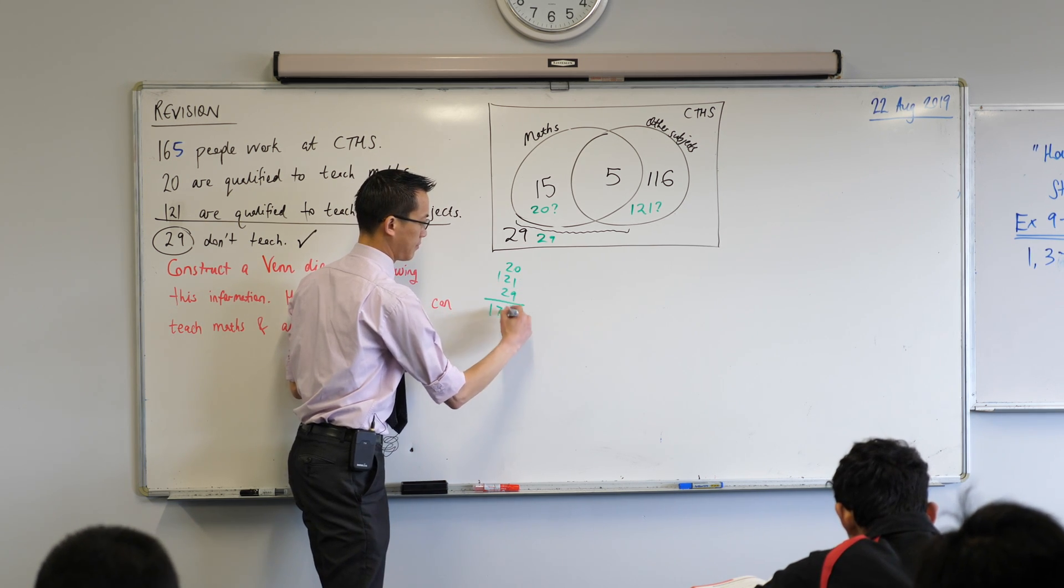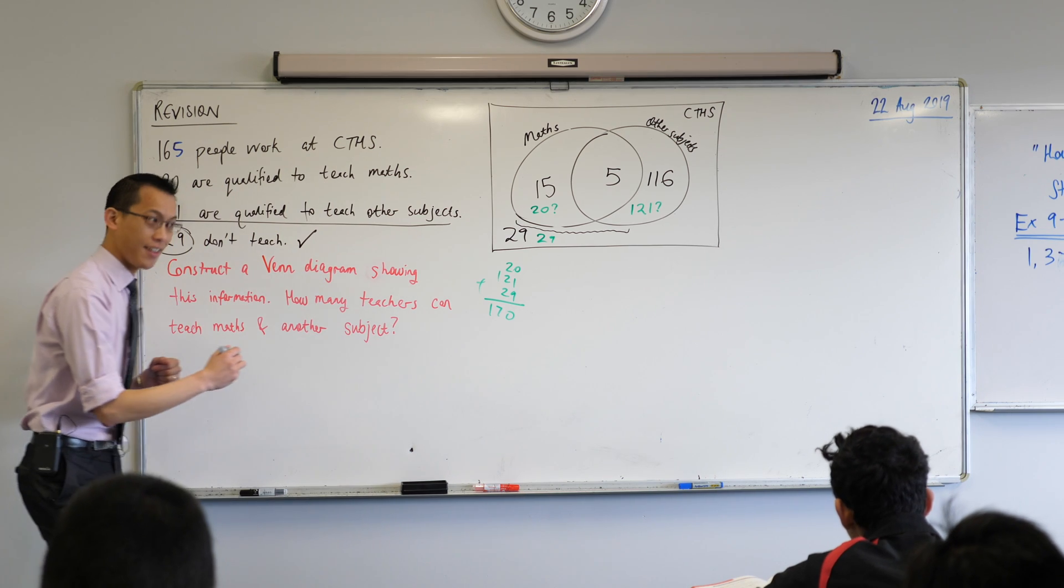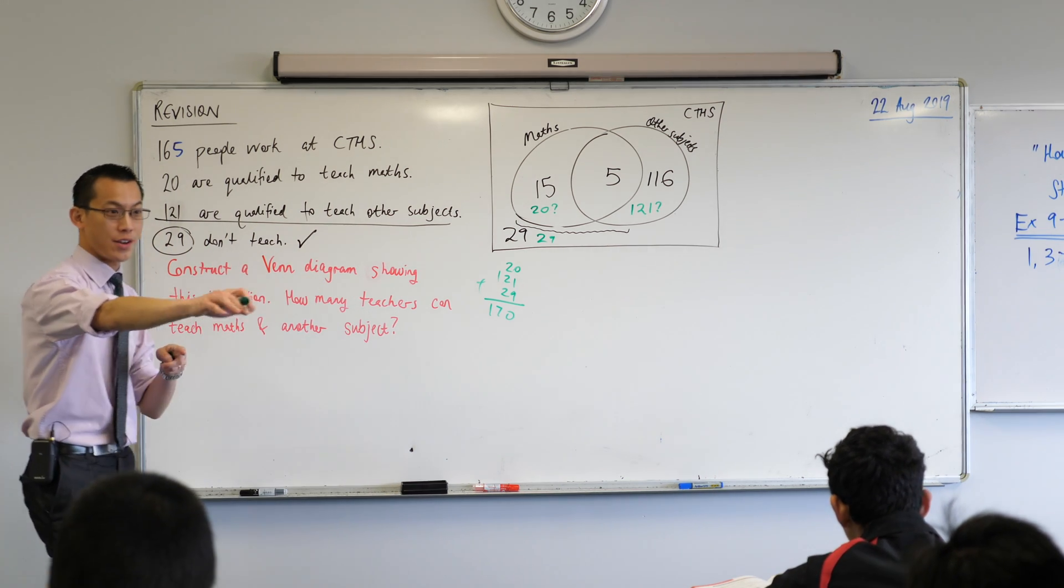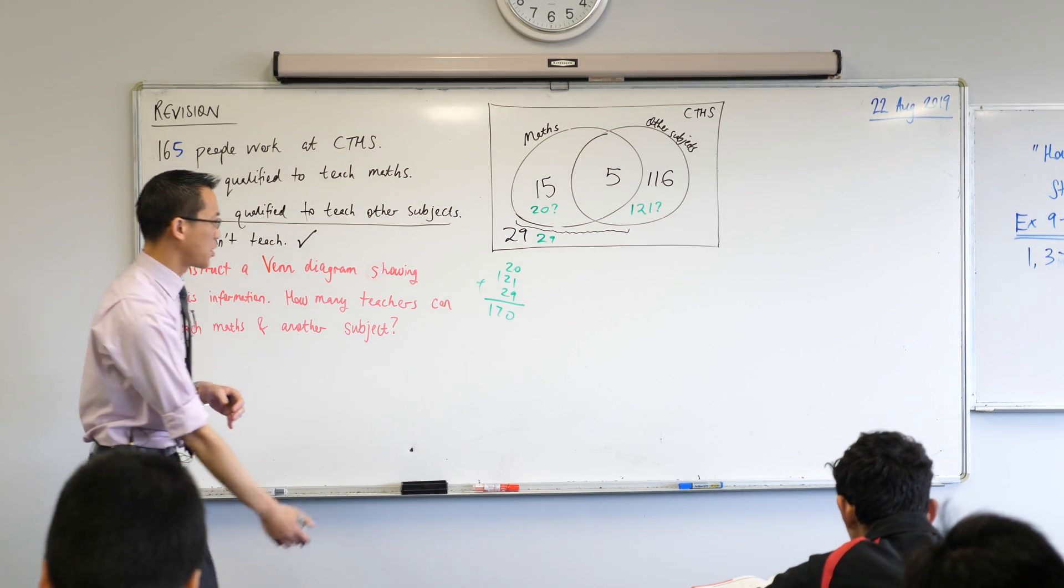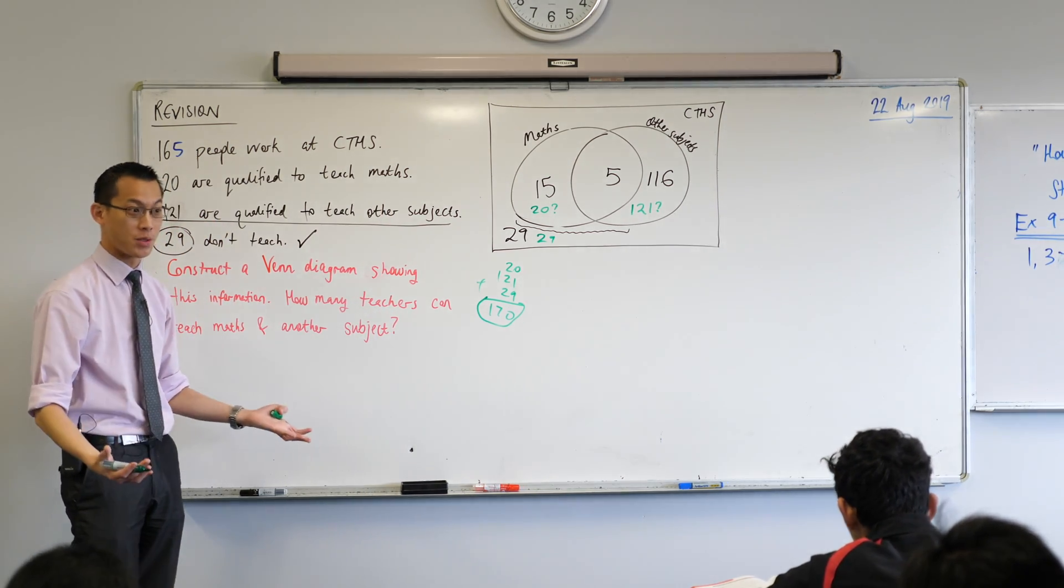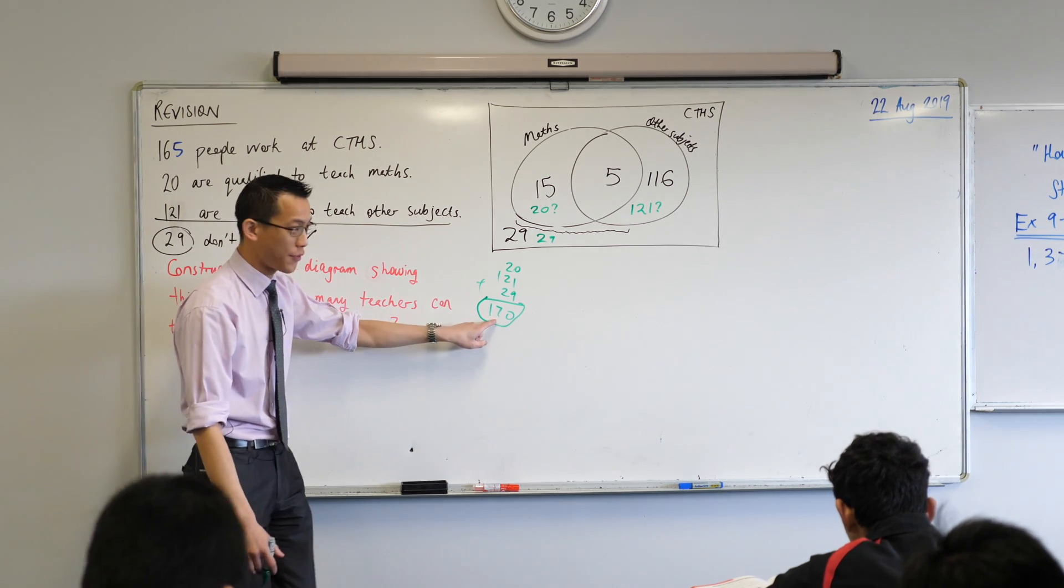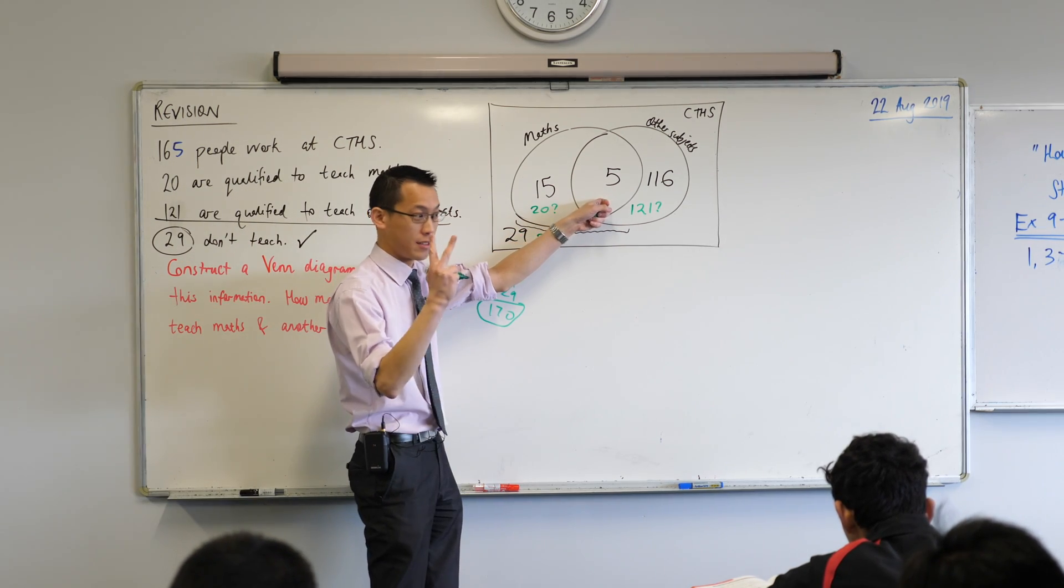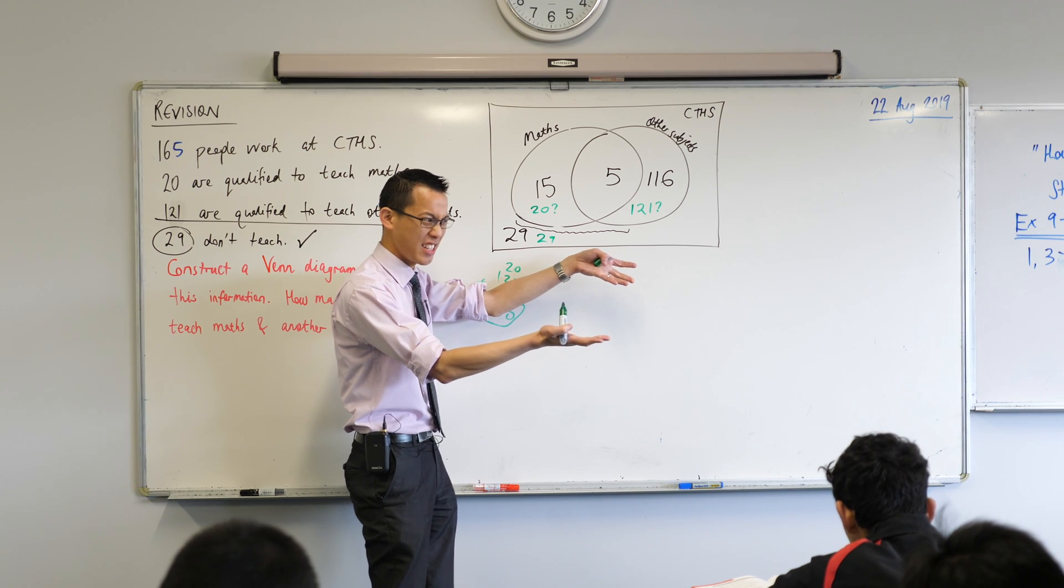And then I added it all together to see how much it became and it was 170. So I knew I needed to get rid of five. So Jessica, you did the same thing? Yep. So you added up all of these numbers and you're like I'm five over. I've got five more than I'm supposed to. So the extra five they must be in here, people we've counted twice.